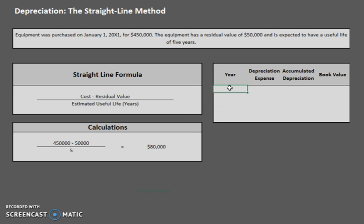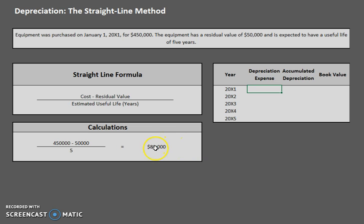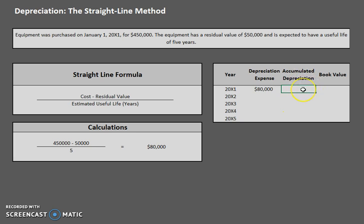Let's go ahead and plug this into the chart we have. We have first year, second year, third year, fourth year, and fifth year. Using the straight line method, we can put $80,000 into every single depreciation box. So now that we have $80,000 in depreciation expense for the first year, let's figure out accumulated depreciation. Accumulated depreciation is exactly as it sounds — it's all the depreciation you have accumulated. So after year one, we have accumulated just $80,000.